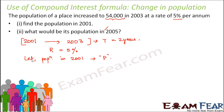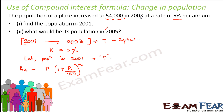Using the compound interest formula, we know that the amount at the end of 2 years is equal to the principal amount into 1 plus R by 100 to the power n. This is the formula for compound interest. Here, the amount is the population at the end of 2 years — that is, in 2003 — which is 54,000.